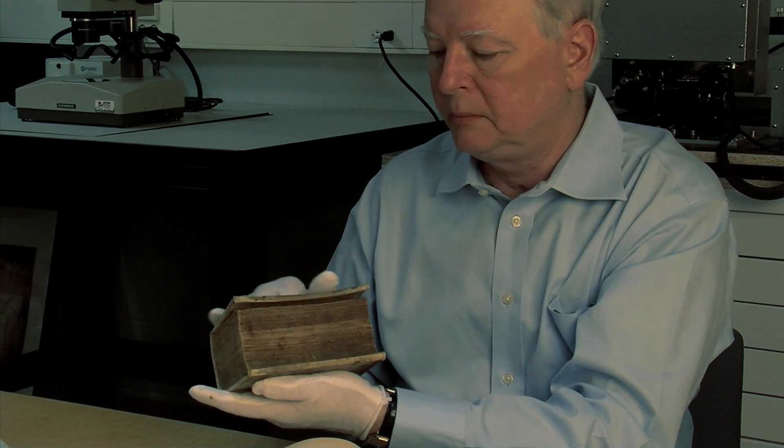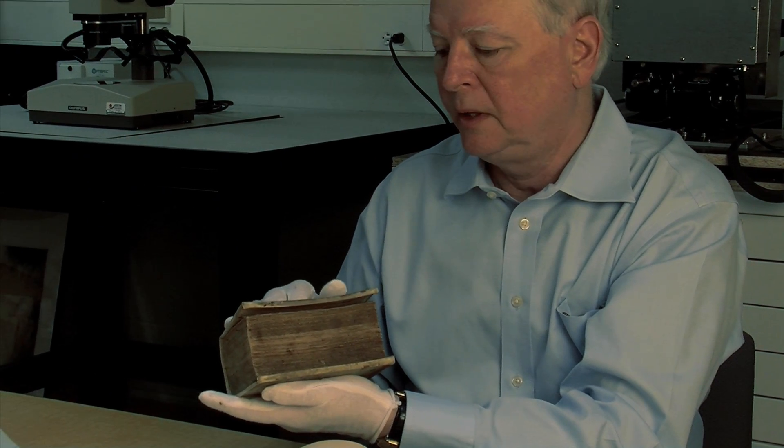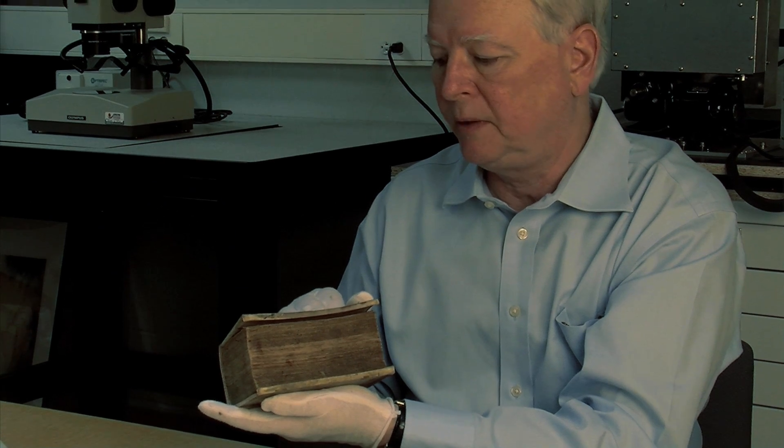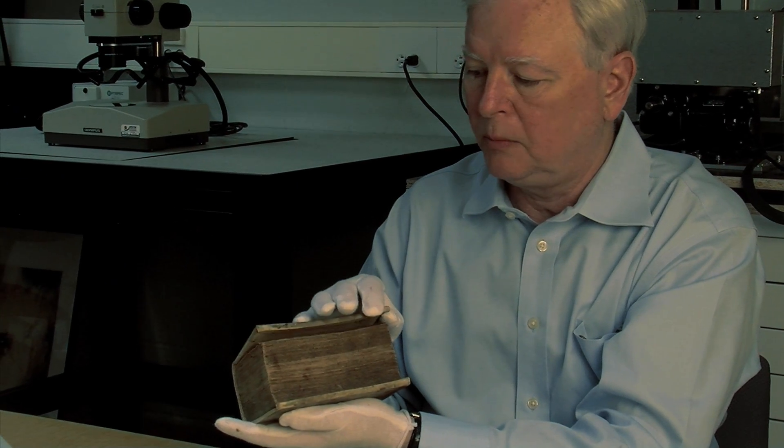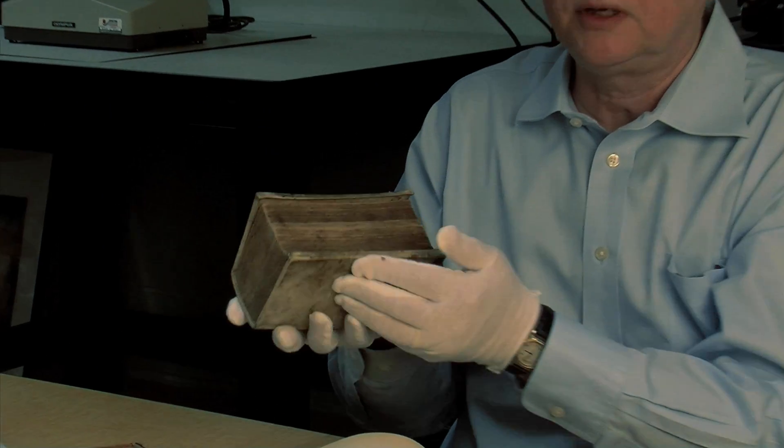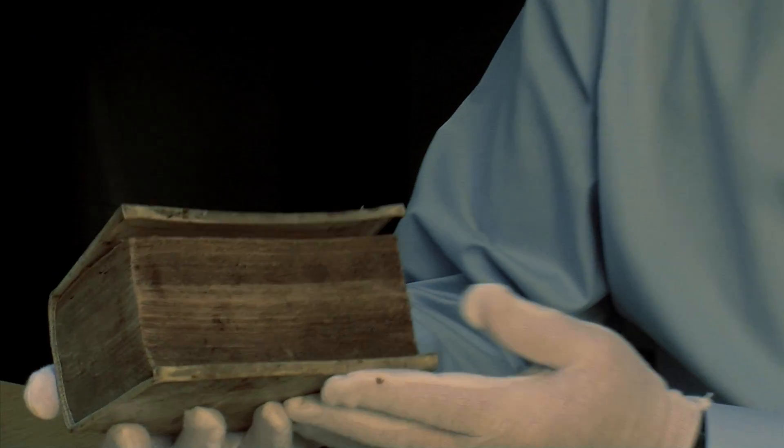This is a little 1710 vellum. Vellum is also called parchment. It's a form of animal skin. It's a protein membrane stretched over cardboard and forms the covers of this little book.